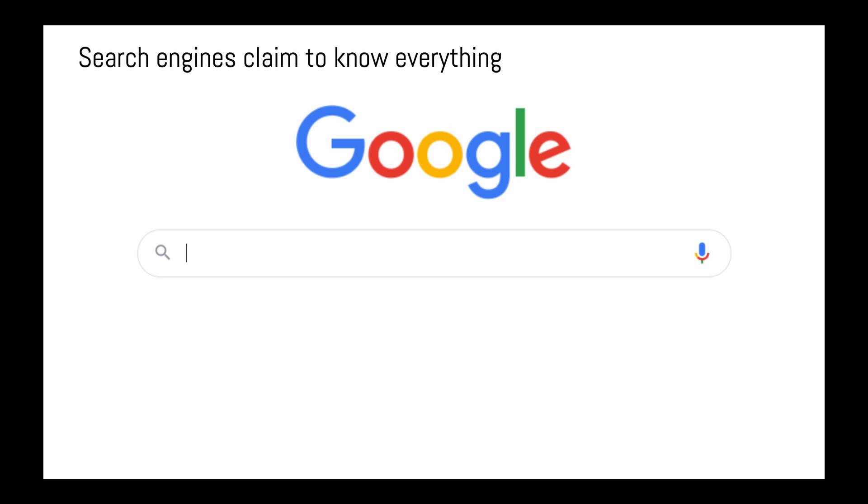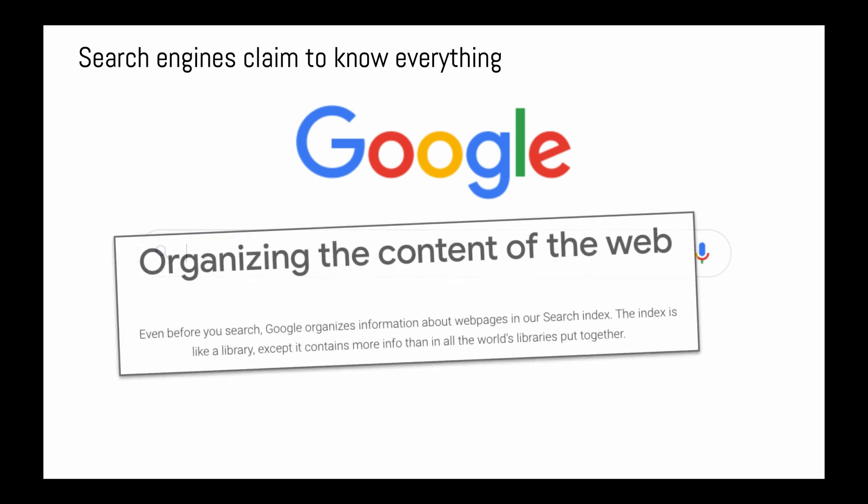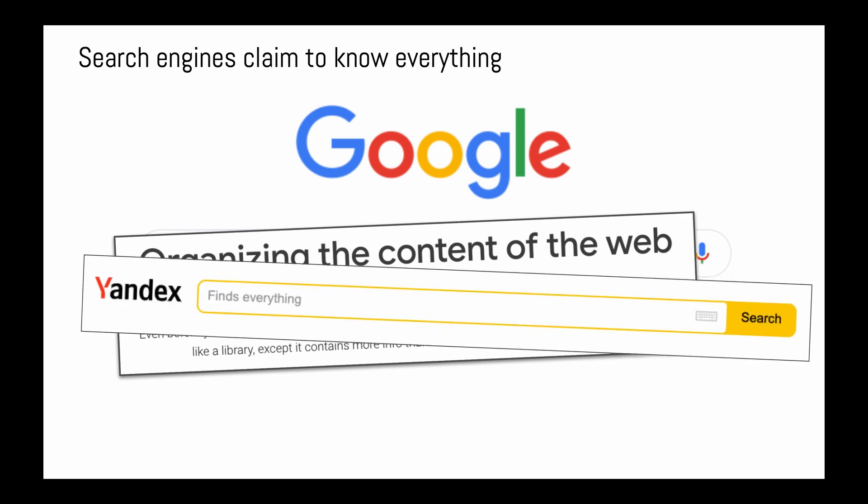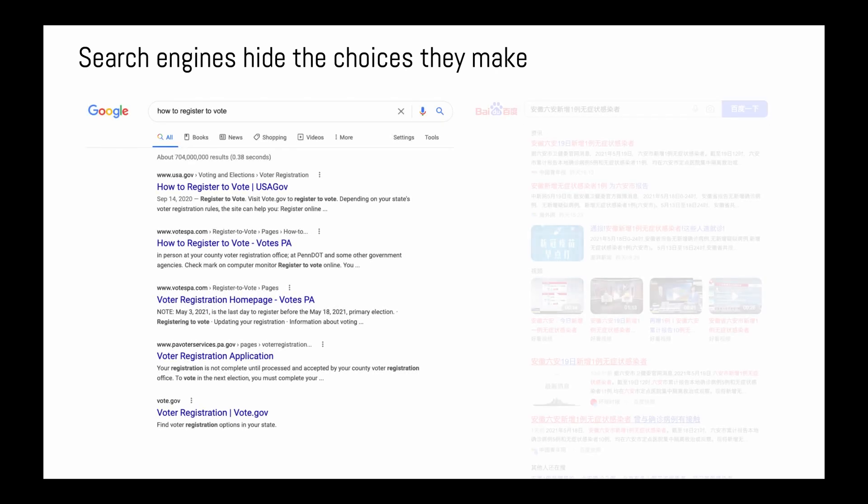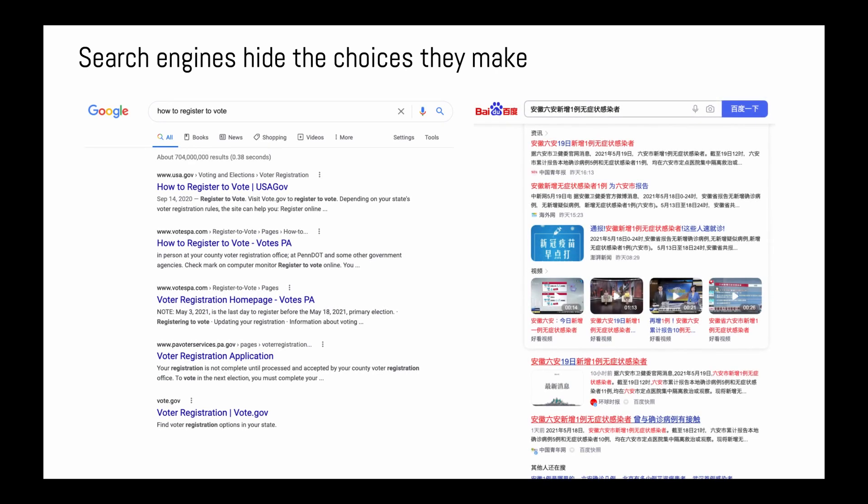Search engines like Google claim to know everything. For example, Google claims on its website that it contains more info than in all the world's libraries put together. Yandex's search bar simply says that it finds everything. This impression is only reinforced by the minimal design of these search engines' interfaces, which omit their partial perspective—the combination of choices that inevitably exclude some points of view in favor of others.